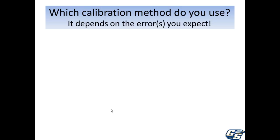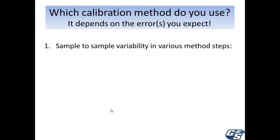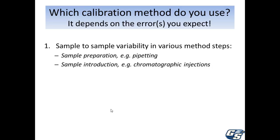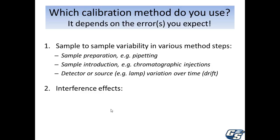There are three different main methods of calibration, and the one you'll actually use will depend upon the exact analytical situation. There are two main types of error that could guide your decision. The first is sample-to-sample variability. The second class of error is errors associated with interference effects if the analyte is present in a complex sample matrix.